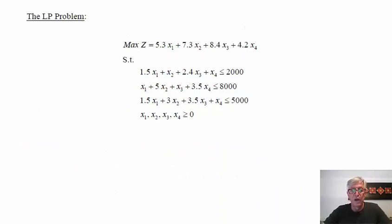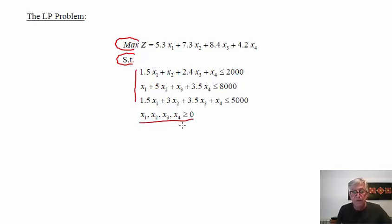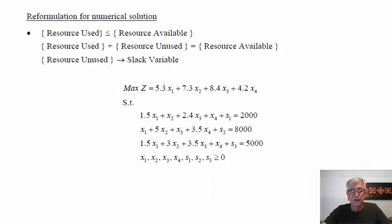Putting it all together, we have the problem formulated: we present the objective function and state whether to maximize or minimize it, subject to the restrictions, and specify that the decision variables must be greater than or equal to zero as continuous variables, since the production process is continuous. The problem as presented cannot be solved directly with the graphical method since we have four decision variables, but we can modify it for a numerical technique.